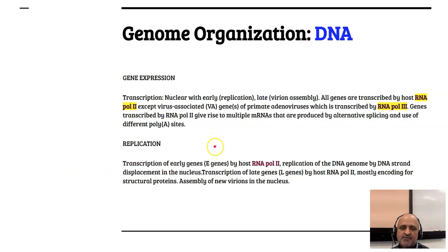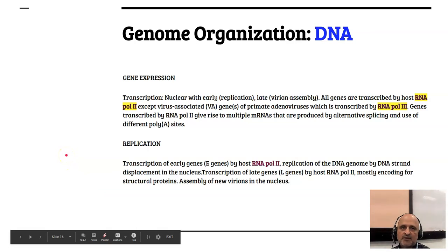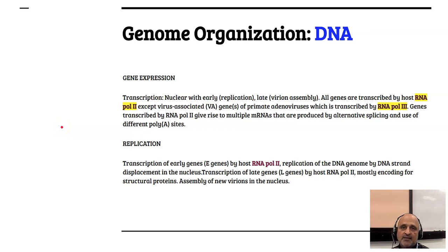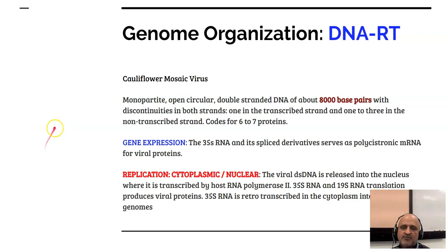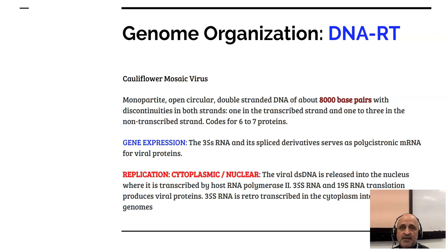In DNA viruses, we have the transcription of early genes as well as the transcription of late genes, both of which are involved in different phases of the viral replication cycle. In the case of reverse transcribing viruses, the example of the cauliflower mosaic virus is a plant virus. They are generally double-stranded viruses with an 8,000 base pair genome which encodes 6 to 7 proteins. The gene expression is initiated from the 35S RNA and the virus will produce a polycistronic mRNA — a polycistronic mRNA consists of a single strand of RNA in which different proteins are encoded.